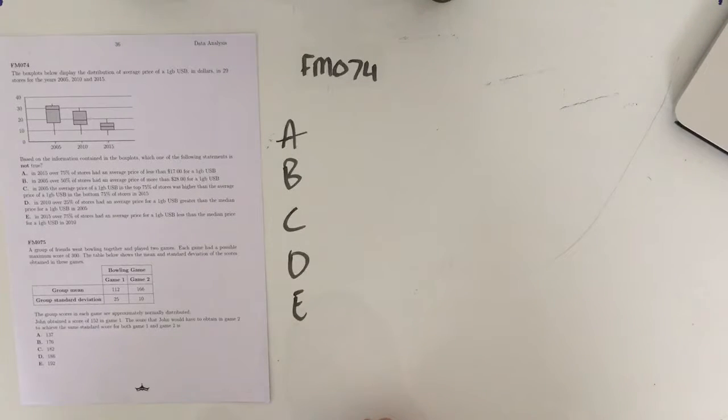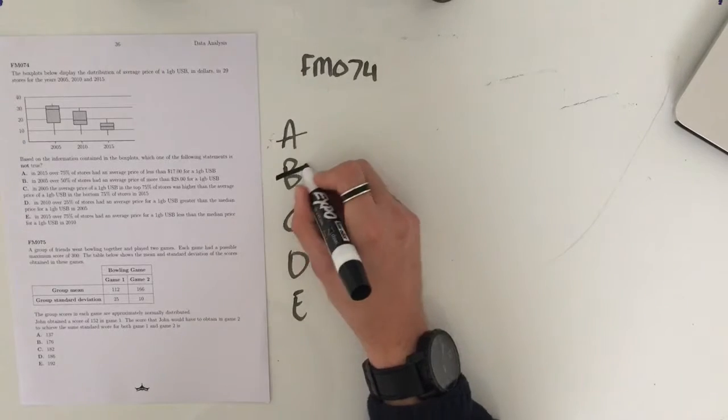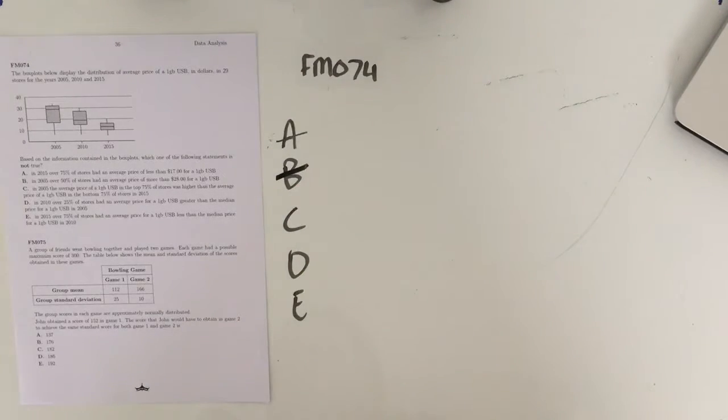In 2005, over 50% of stores had an average price of more than $28 for a 1GB USB. So in 2005, we're looking over at this box plot now. We want to see if 50% of stores have an average price of more than $28. It would appear that they do. That median line there appears to be either right on $28 or near $29, hence why we're fixing it up a bit. But yes, I would say once again, that statement is true, which means it is not our selected statement.